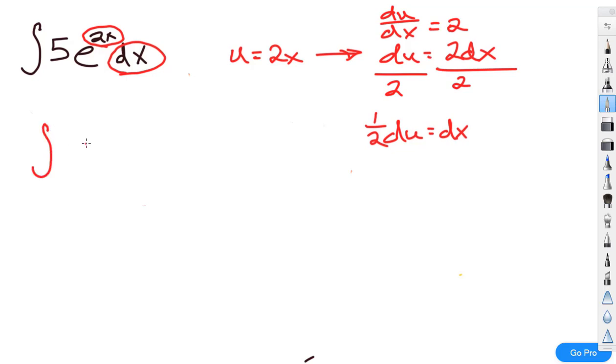So now if I plug this in, what I'm going to have is the integral 5e to the, and instead of 2x, I let that equal u, times, and now instead of dx, what I'm going to have is 1 half du.